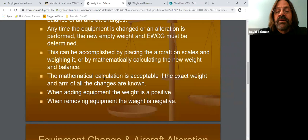So basically, we're going to do the same thing we did yesterday, but now our items are going to be like radios and stuff like that. So anytime we add something to the aircraft, it's going to be a positive weight. And then anytime we remove something, it's going to be a negative. Make sense?